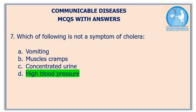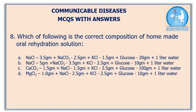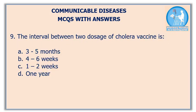Due to cholera, blood pressure is decreased, not elevated. Question number eight: which of the following is the correct composition of homemade oral rehydration solution? The correct answer is option A.